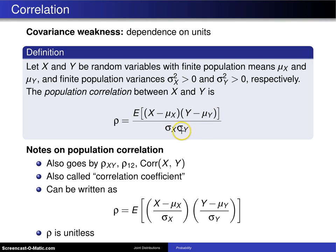The population correlation also goes by ρ_XY if there's any confusion on which random variables are being considered. ρ_XY is used. I've seen ρ_12 also used.